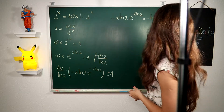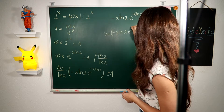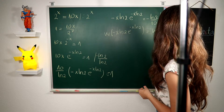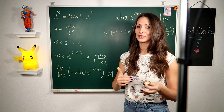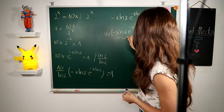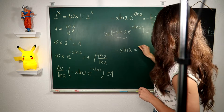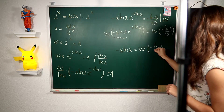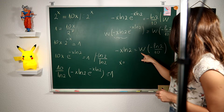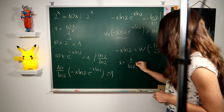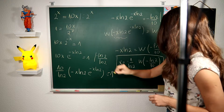We can see that we have (−x·ln 2) in front and (−x·ln 2) in the exponent, so we are able to apply the LambertW function. Applying W, we get W of [(−x·ln 2)·e^(−x·ln 2)] equals W of (−ln 2 / 10). Solving for x, we get x = (−1 / ln 2) · W(−ln 2 / 10).